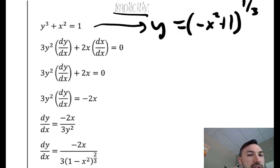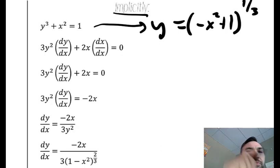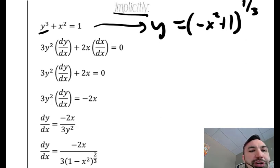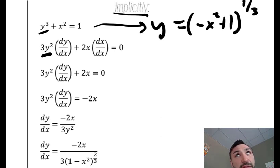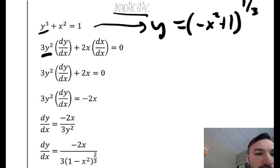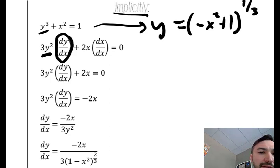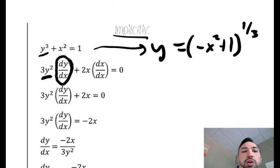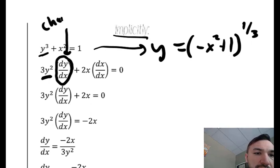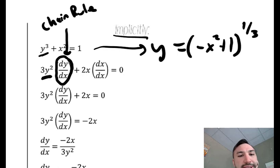It works out mostly how you would expect, except there is a chain rule piece that you may not think of. When we take the derivative of this, I can bring the power down and lower the power by one. The problem is x is my variable and this one is y. So I'm taking the derivative of y with respect to x, and I must have that there because I don't know that the rate of change of y is 1. This is similar to the chain rule and why it needs to be there.